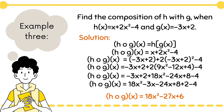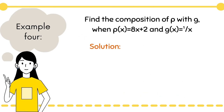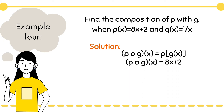That was a little tricky but great job, you got through it. Now for our fourth example, let's add a fraction into the mix. Example number four: find the composition of p with g when p(x) = 8x + 2 and g(x) = 1/x. So we have p of g of x. Same as before, write down our p(x): 8x + 2. Then substitute x with g(x), so it becomes 8 times (1/x) + 2.